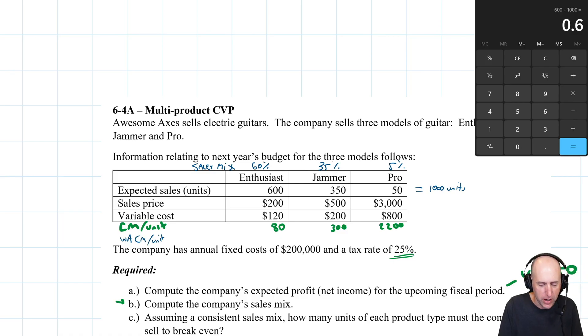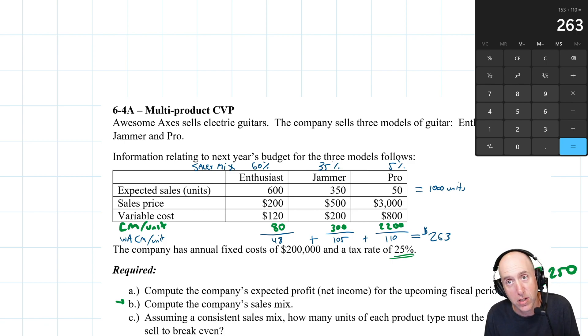A weighted average is you multiply the mix by the CM per unit. So weighted average CM per unit: 60% of my guitars are Enthusiasts and each makes 80 bucks, so 60 times 80 is 48. 35 times 300 is 105. 5 times 2200 is 110. Add them all together: 48 plus 105 plus 110 equals 263 dollars. On average, when a customer walks out the door, they're contributing 263 dollars to my bottom line.